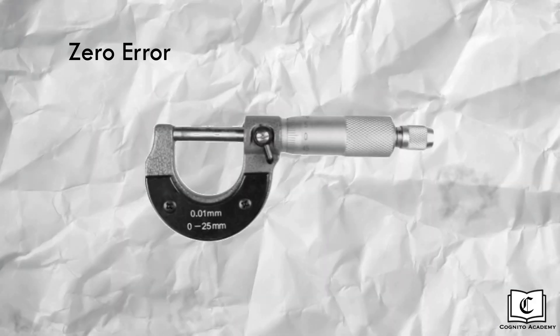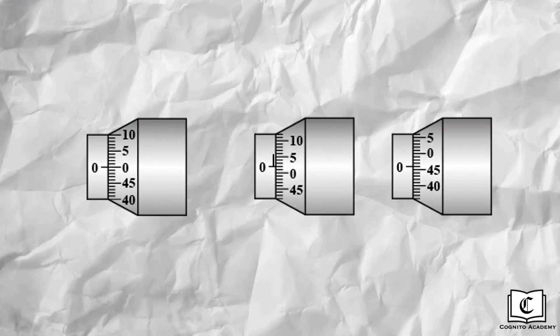Like the vernier caliper, we need to examine the micrometer screw gauge for zero error to account for the error in our observed reading. That is, we check if the timbre reading is 0.00 mm when the micrometer screw gauge is closed. Now, let's identify the different zero errors. In the first reading, the timbre reads 0.00 mm, hence there is no zero error.